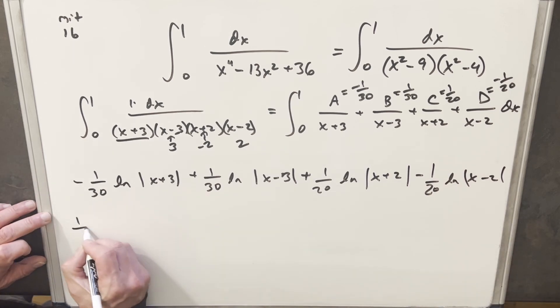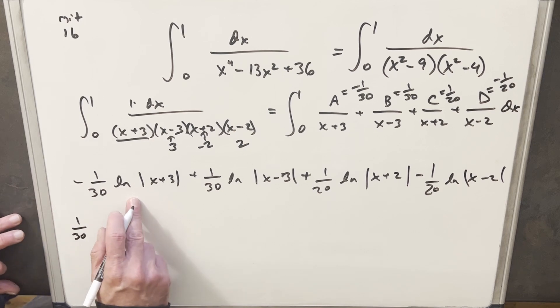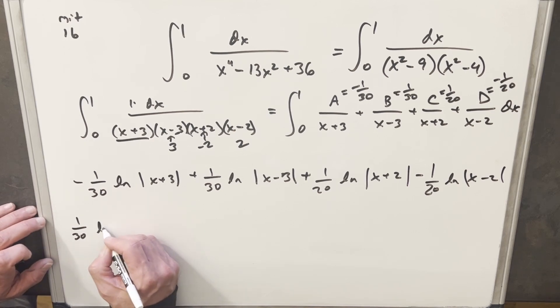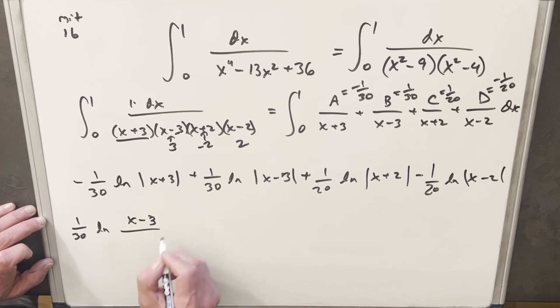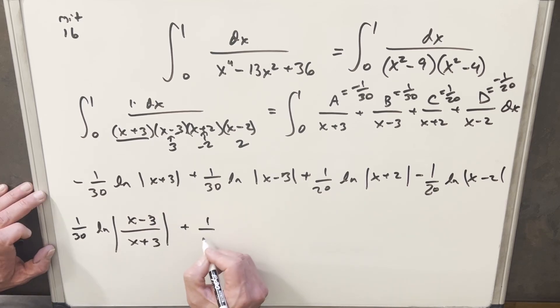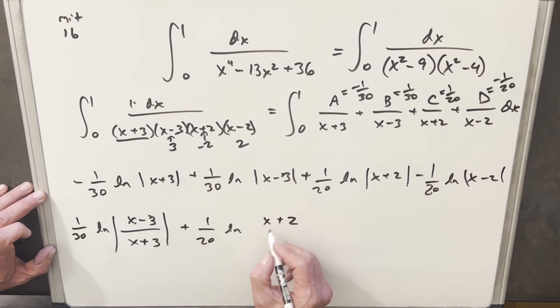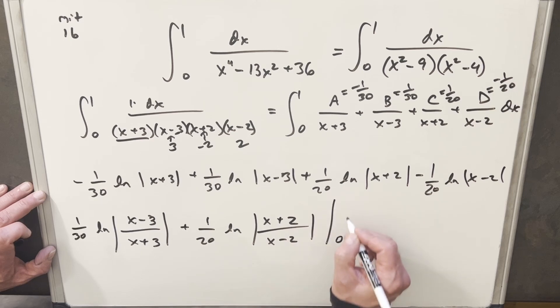So then here I'm gonna factor out a 1 over 30. I'm gonna group these together using the log property. So I'm gonna write this natural log as x minus 3 over x plus 3. Then here I'm gonna factor out, we'll take a 1 over 20 out, and then by log properties again, we'll turn this into a fraction. So we'll have x plus 2, the minus leads to divide by x minus 2, and we're evaluating this all from 0 to 1.